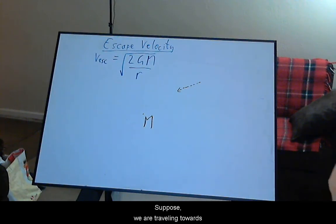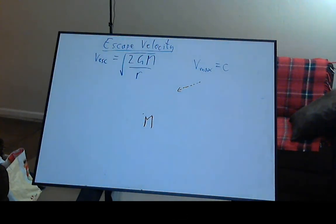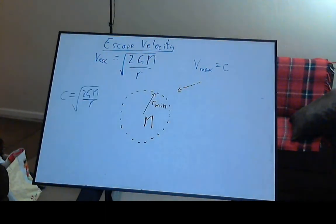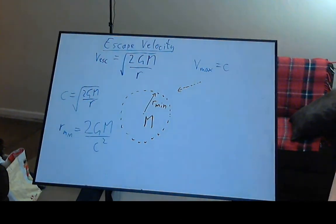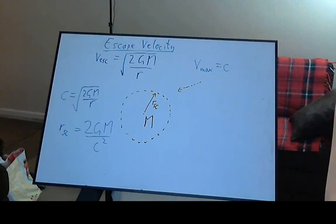Let's demonstrate the use of escape velocity on a scientific application. Suppose we are traveling towards a really massive object. The closer we get to it, the higher the escape velocity will be. The highest speed in the universe is the speed of light. How close can we get to the mass before there is no possible way we can escape? Let's solve for this radius by rearranging our equation. This minimum radius is directly proportional to the mass of the object.